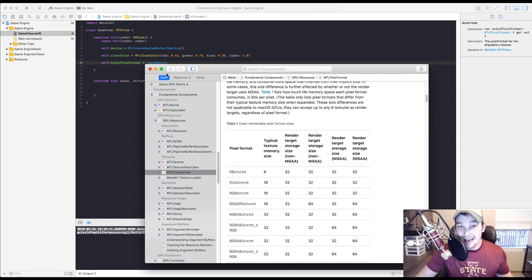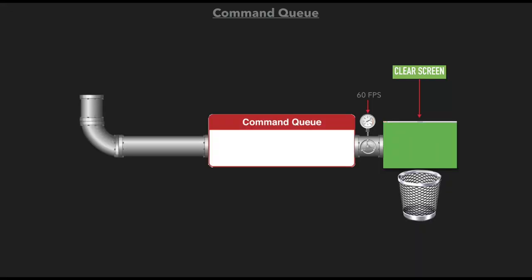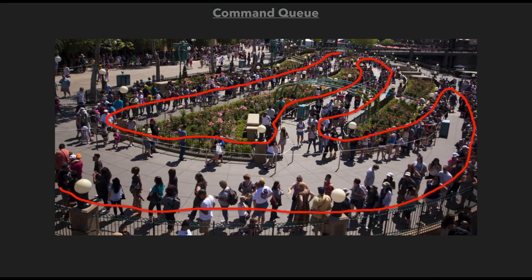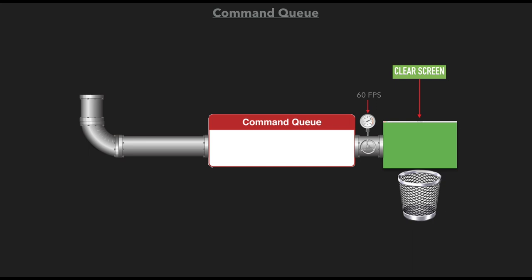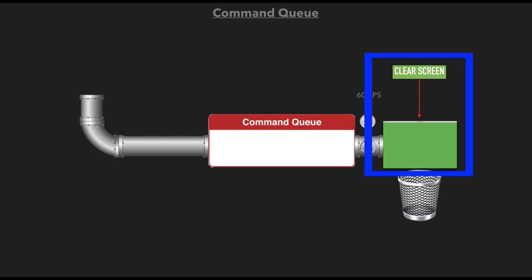Next we're going to need the command queue. The command queue is a queue — picture yourself going to Disneyland and waiting in line, first in first out, FIFO. The command queue acts as a limiter of who goes out at what time, and it's populated with command buffers. Once it's ready to commit a command buffer, it will push it to our clear screen, and then once the buffer is pushed to the clear screen, it will be discarded.